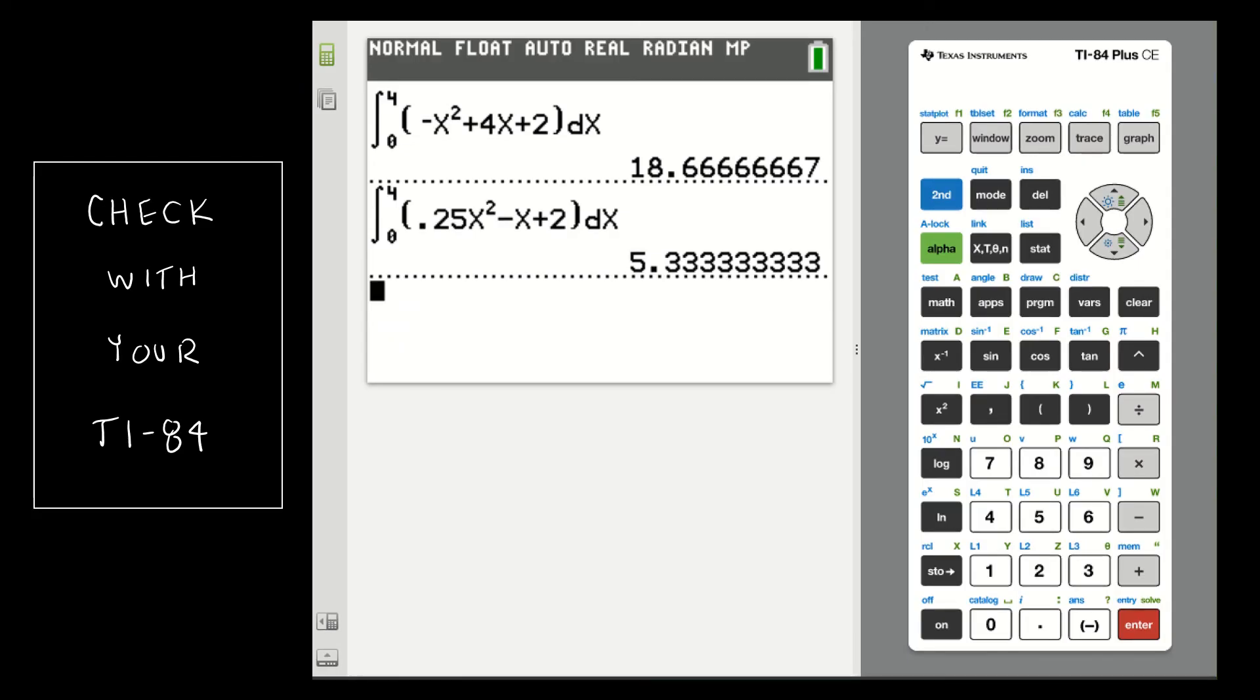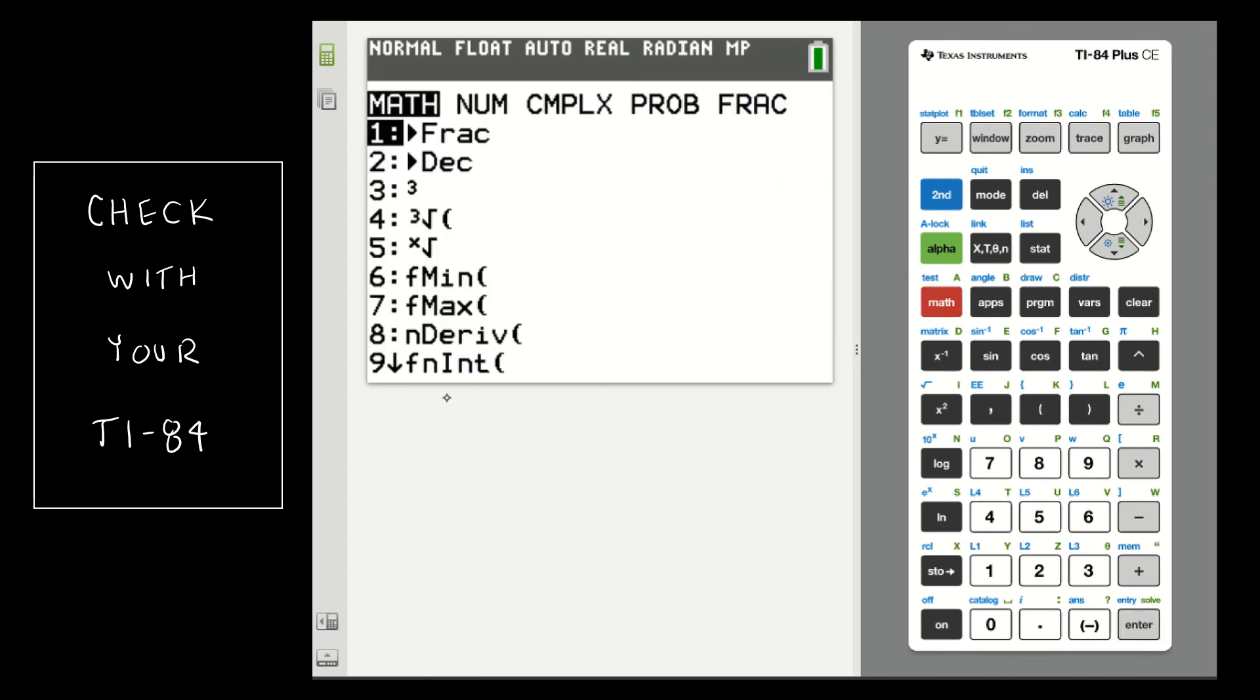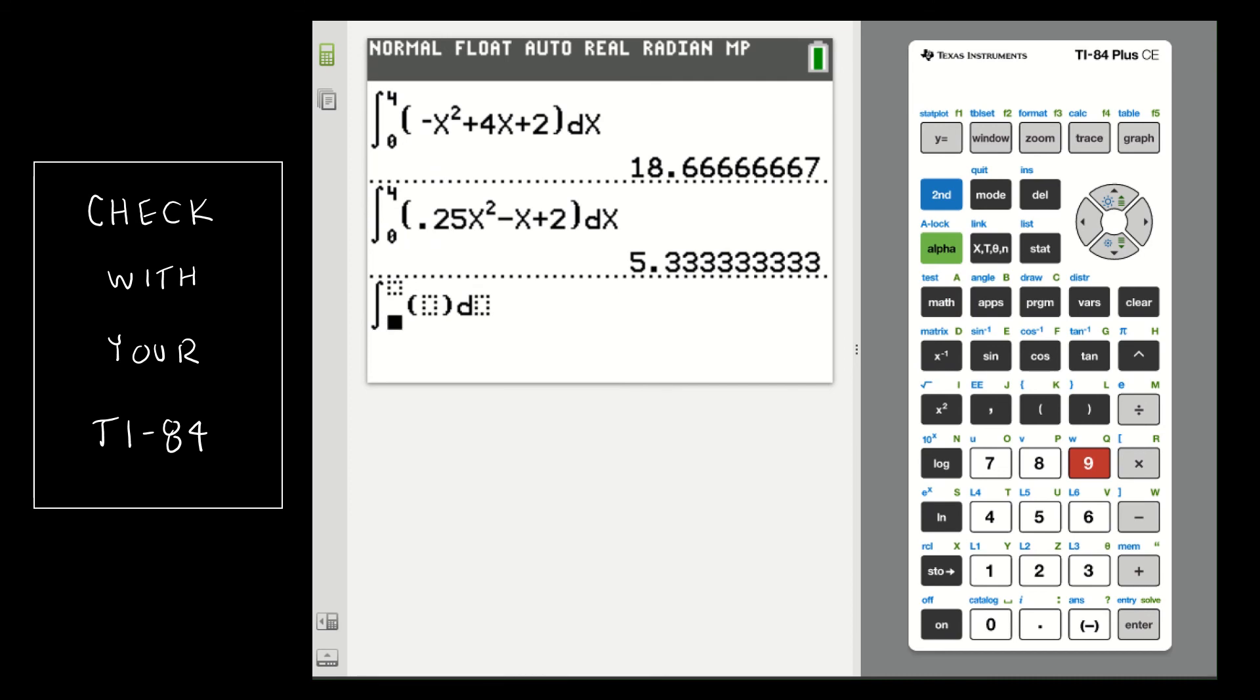I did want to remind you that of course your calculator is capable of finding these solutions. Now it's not going to show you any of the work in between, which of course I'm going to look for. But if you want to use the calculator to check your work, you're simply going to go to Math 9, and 9 is that function integration, and that's going to give you that format to plug in your value. As you can see I've already taken our two examples that we've done and checked my result. I had 18 and 2/3 for the first one, which matches 18.6 repeating, and I had 5 and 1/3 for the second solution, and that matches 5.3 repeating.